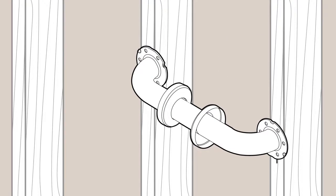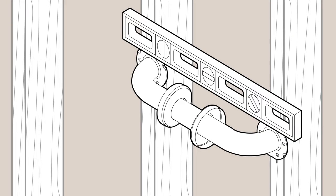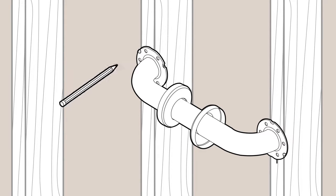Making sure the grab bar is level, position the grab bar over the stud marks. Using a pencil, mark the hole locations on each of the mounting posts.